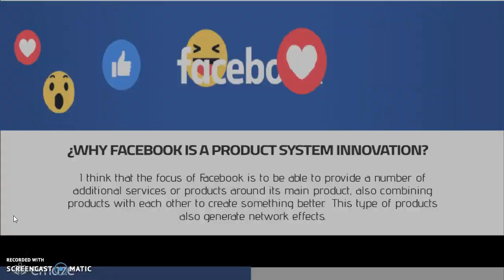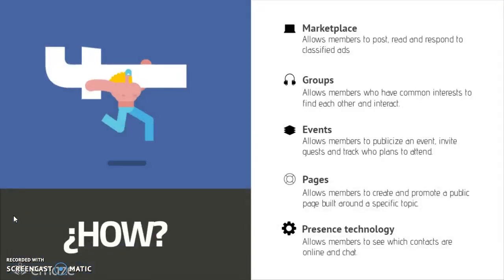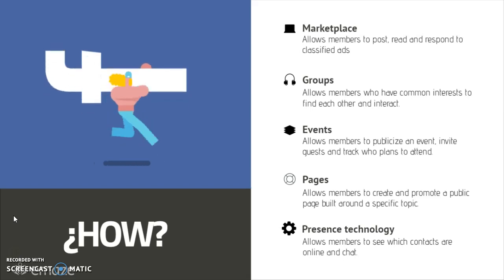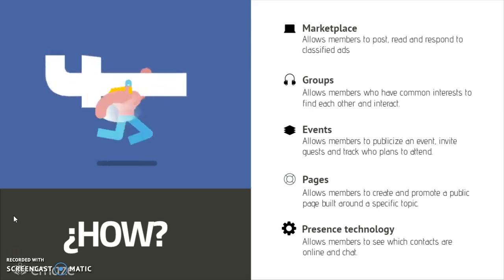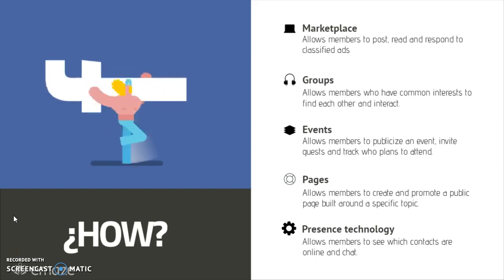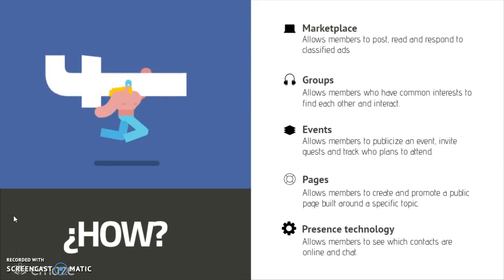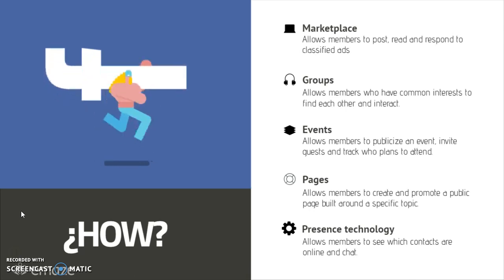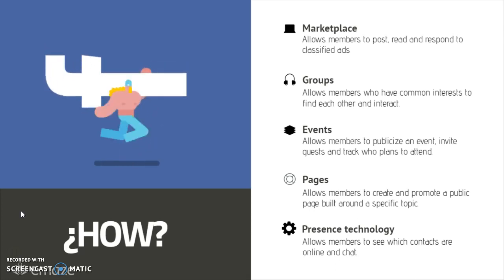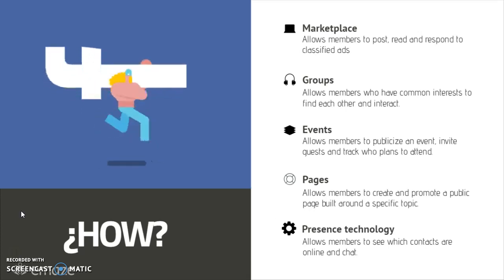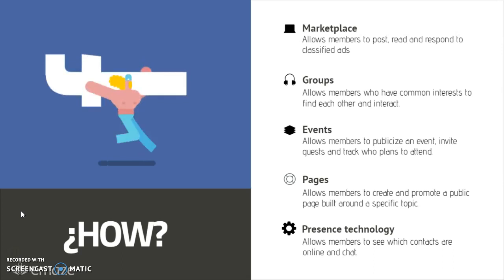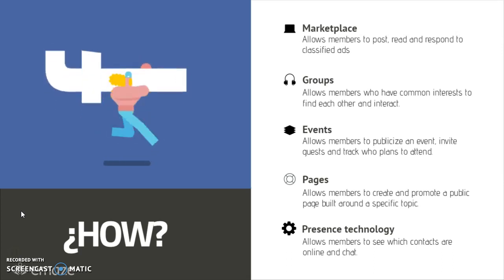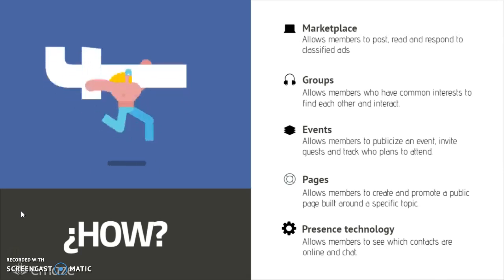Facebook has a marketplace that allows members to post, read and respond to classified ads. Also, it comes with groups that allows members who have common interests to find each other and interact. Facebook also gives you a chance to post events that allows members to publicize an event, invite guests and track group plans to attend. Also, you can have pages that allows members to create and promote a public page built around a specific topic, and presence of technology that allows members to see which contacts are online and chat with them.